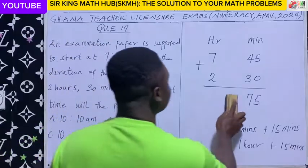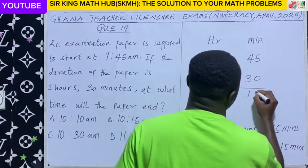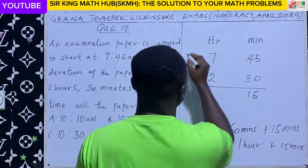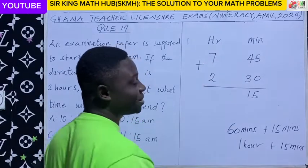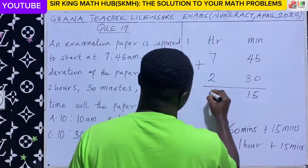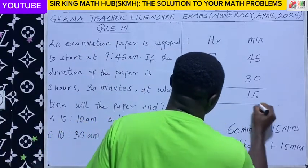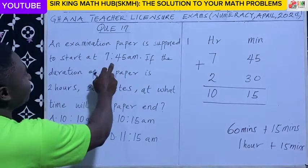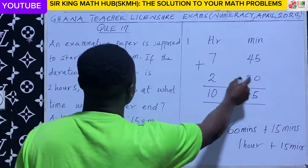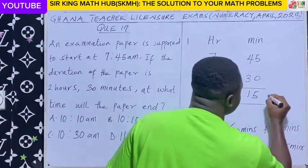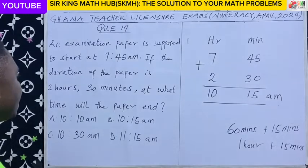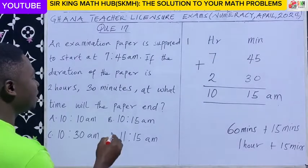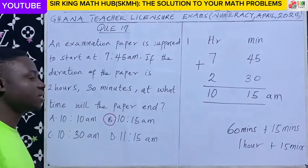At the minutes column we are going to have 15. Take a look — we have an extra one hour. For the hours column: 7 hours plus 2 hours is 9 hours, plus the extra one hour, making 10. Since the paper is starting at 7:45am, 2 hours 30 minutes after 7:45am will still be in am. So in conclusion, the paper will end at exactly 10:15am. The right answer is option B.